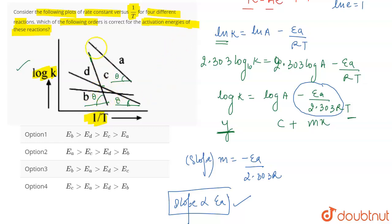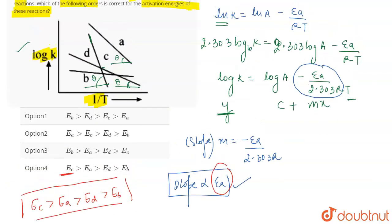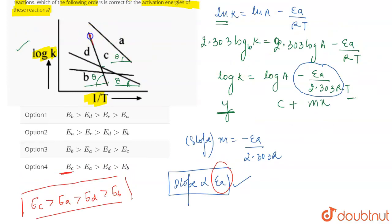So from here, what do we understand? That as C makes the maximum angle, it has the maximum slope. And as it has the maximum slope, it is going to have the maximum value of Ea. And there's only one option where the activation energy for C is greater. So the order will be Ec, Ea, Eb and Ed. Because if we talk about curves D and B, we can't properly determine just by looking at it which angle will be greater.